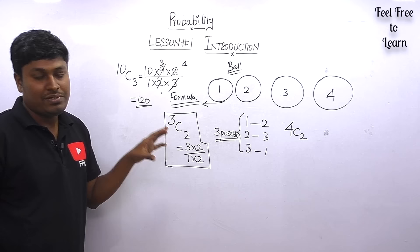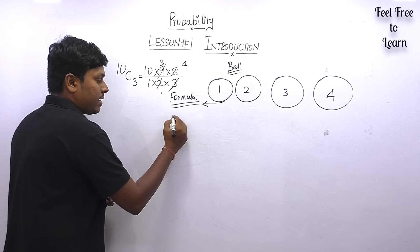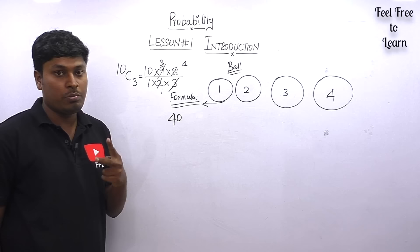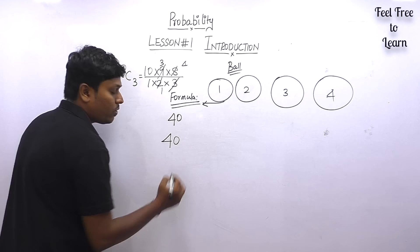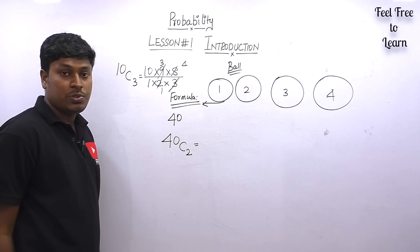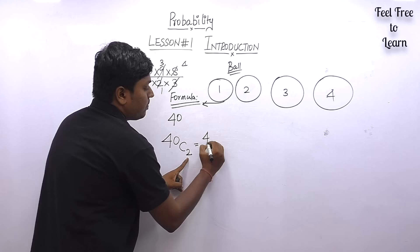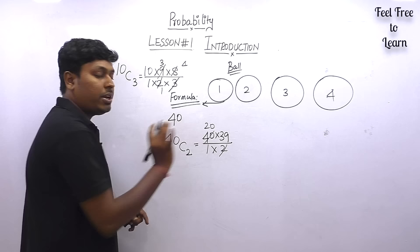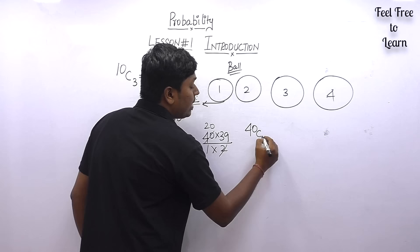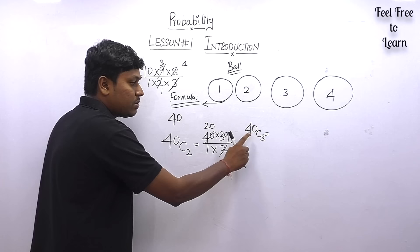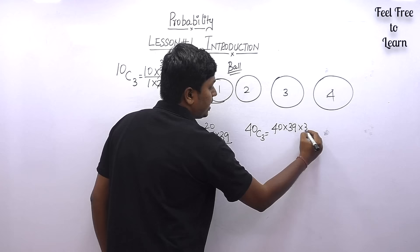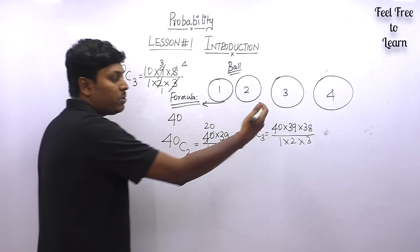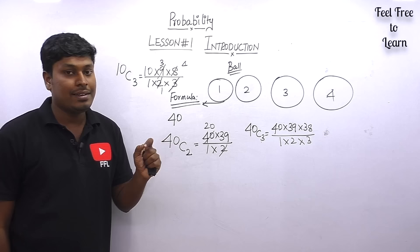For example, assume there are 40 balls and our target is to pick two balls. You write 40C2, which means 40 reduced two times: 40 into 39, divided by 1 into 2. Cancel and multiply to get the answer. If it were 40C3, you reduce 40 three times: 40 into 39 into 38, divided by 1 into 2 into 3, then cancel to find the answer.